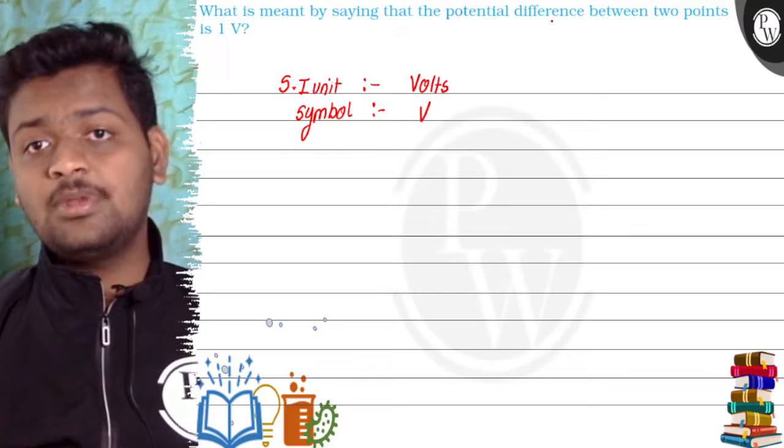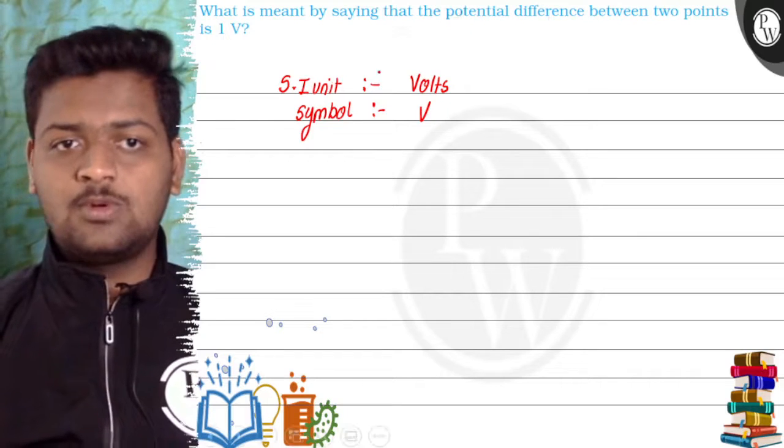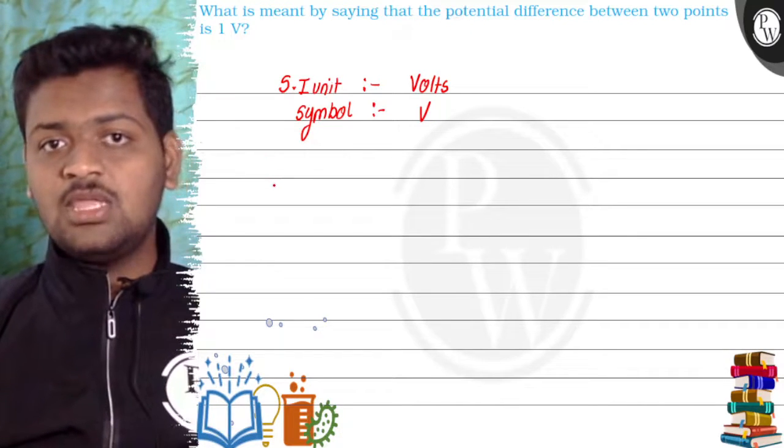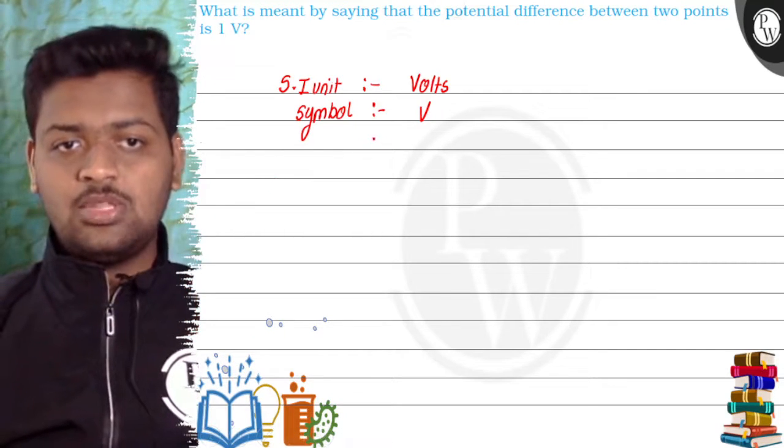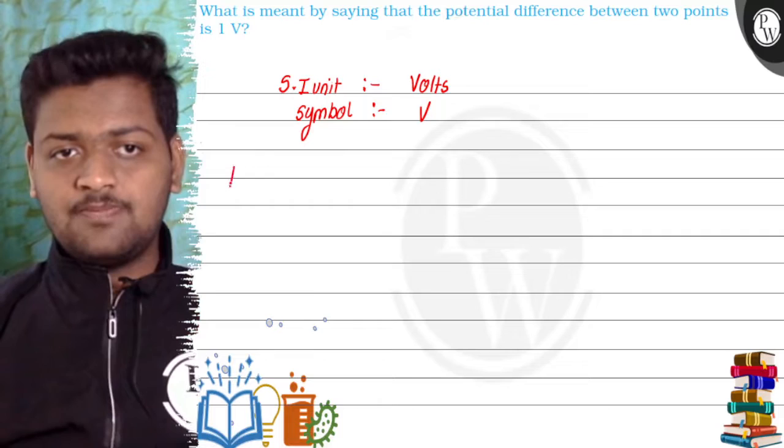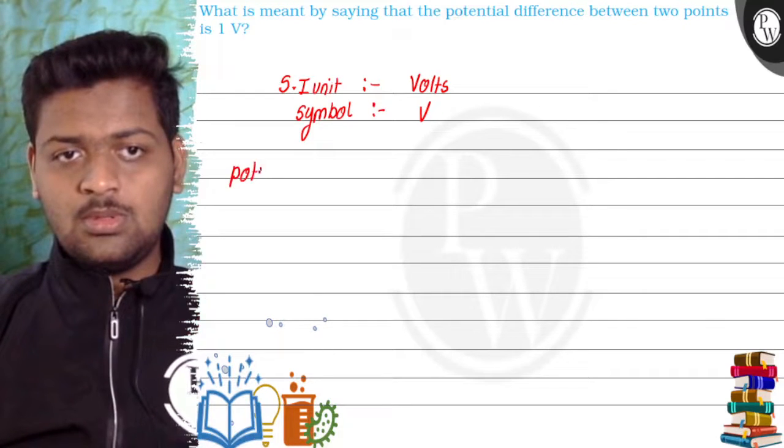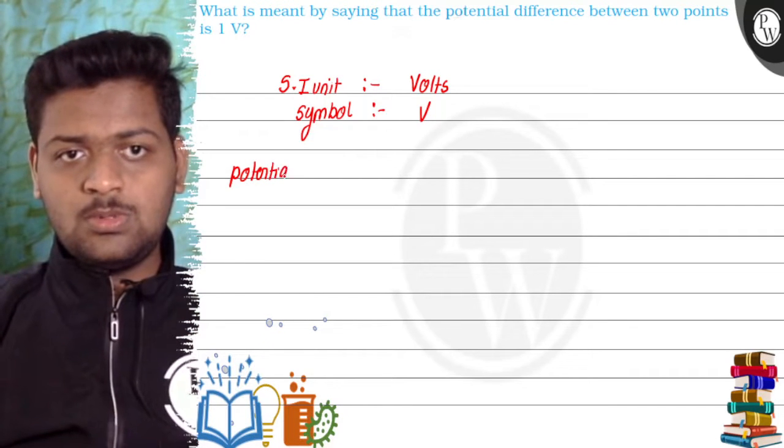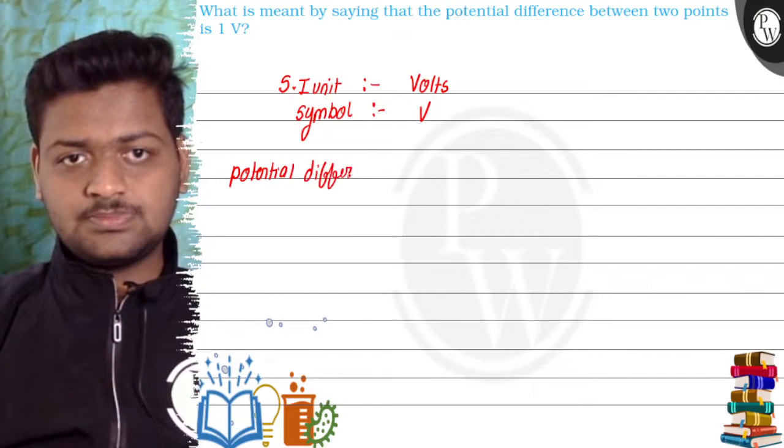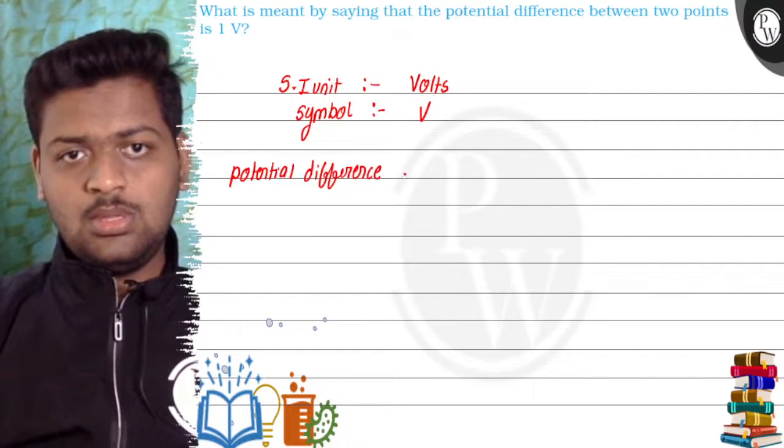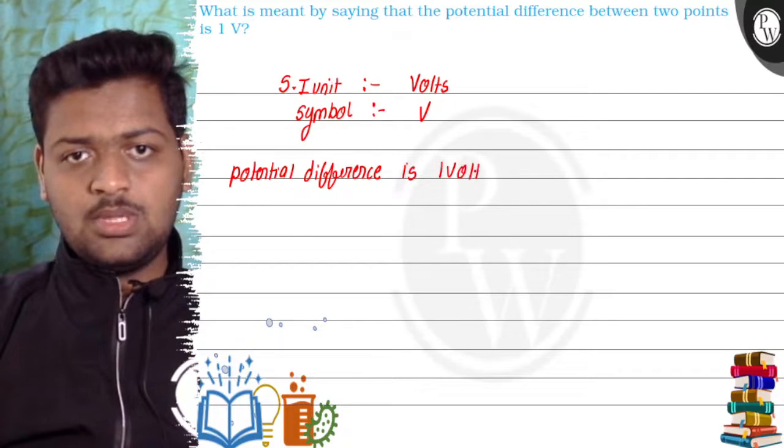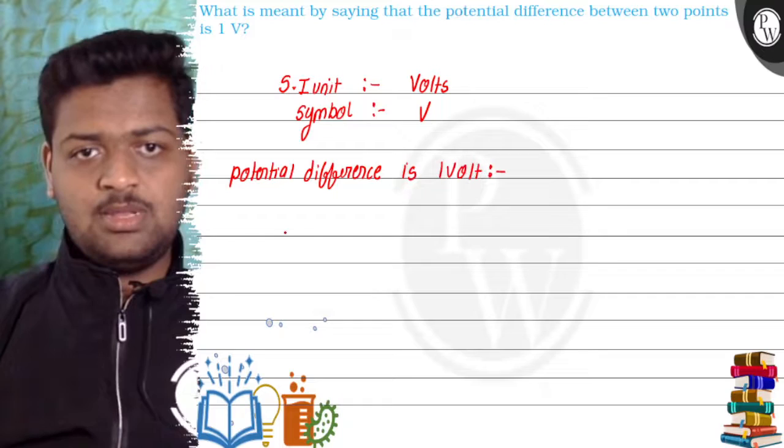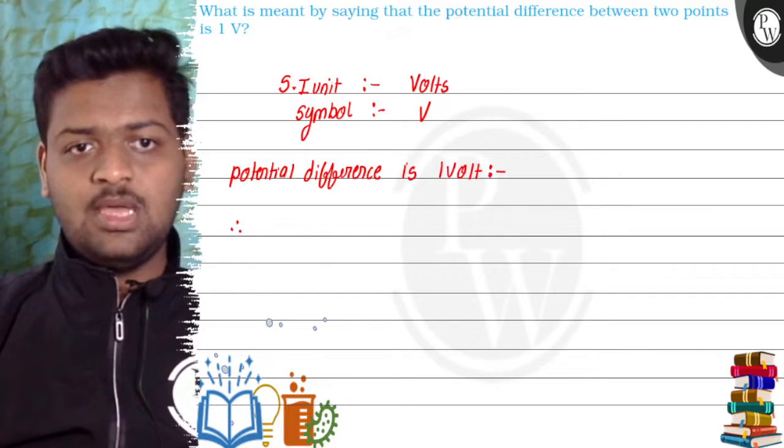We will try to answer this question: What is meant by saying the potential difference between two points is one volt? Now we are asking what is meant by this. We will write the potential difference is one volt. This meaning we will write.